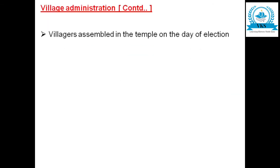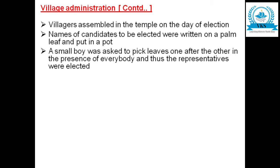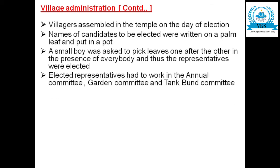Kuduwalai is a lucky draw system. The villagers assembled in the temple on the day of the election. Names of candidates to be elected were written on a palm leaf and put in a pot. A small boy was randomly asked to pick the leaves one after another in the presence of everybody, and thus the representatives were elected.